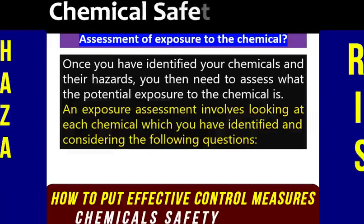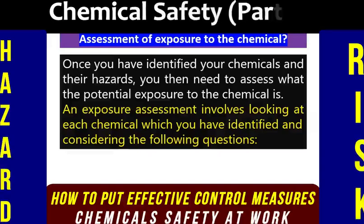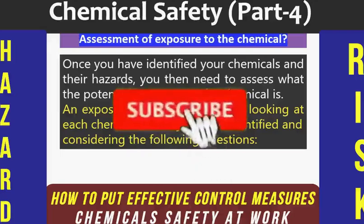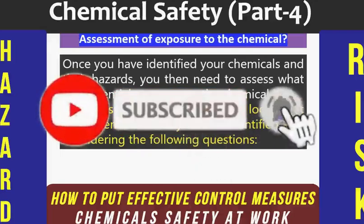After recognizing the potential chemical hazards and after knowing the level of risk, we have to decide the suitable control measures, hierarchy of controls, and how we can manage the chemicals on site safely. Once you have identified your chemicals and their hazards, you then need to assess what the potential exposure to the chemical is.